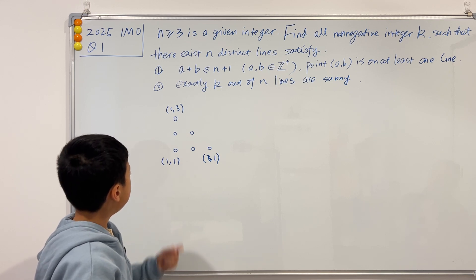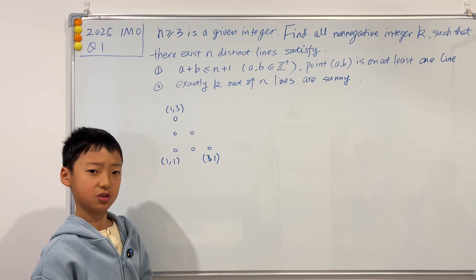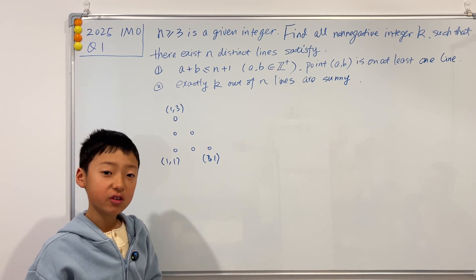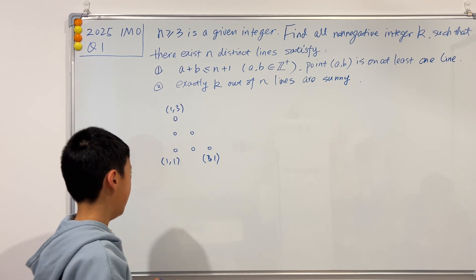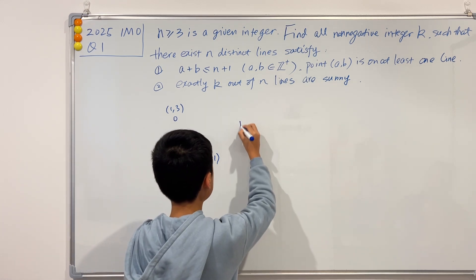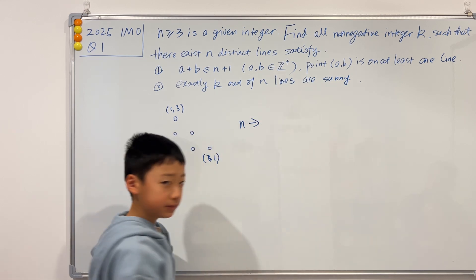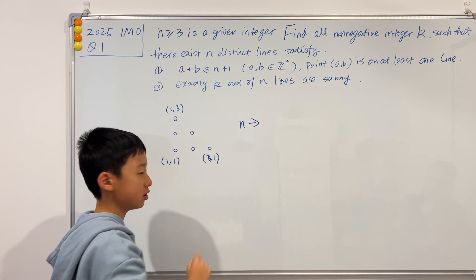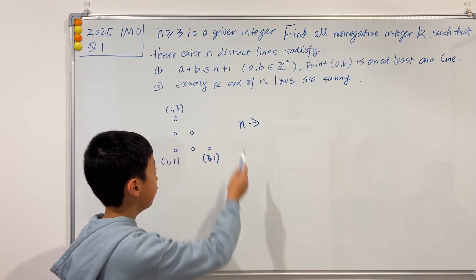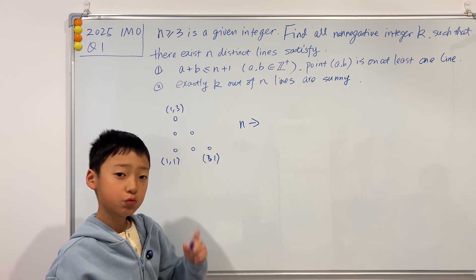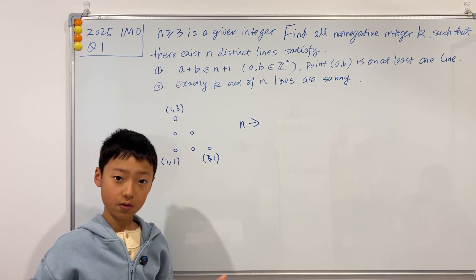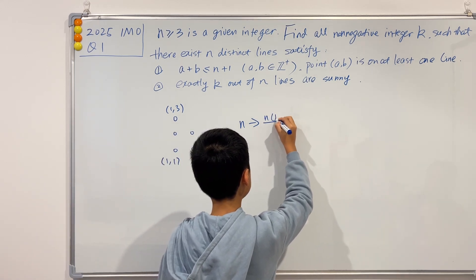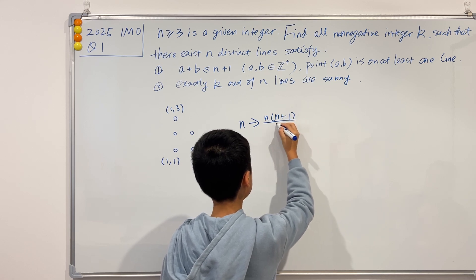We only have 3 lines to pass through so many dots. In this case, that's 1 plus 2 plus 3 dots. So if we generalize to n lines, we need n lines passing through 1 plus 2 plus all the way to n dots, and the formula for that is n times (n plus 1) over 2.